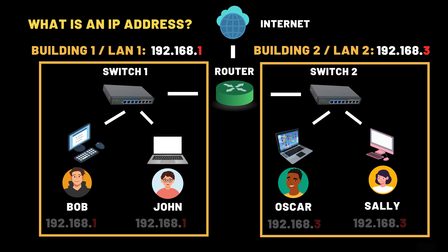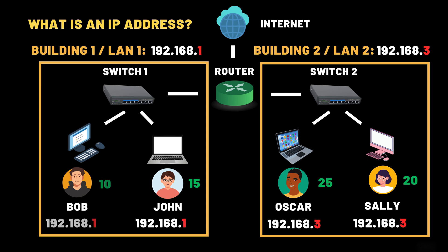Here's the key: all apartments inside the same building share the same postal code, but each apartment has a unique number to identify it. For example, Bob's apartment has the number 10. Together, the postal code and the apartment number form the full apartment address — and that's exactly what an IP address is. For example, Bob's IP address is 192.168.1.10. That tells us he's in the 192.168.1 building, also called a subnet in networking, and his apartment, or device number, is 10.